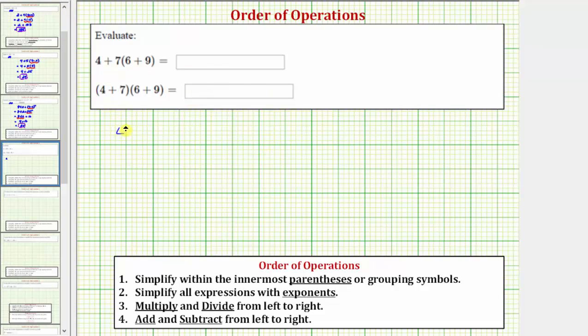So our first expression, we have four plus seven times the quantity six plus nine. Looking at the order of operations, the first step is to simplify within the innermost parentheses or grouping symbols, which means for this first expression, we want to simplify inside the parentheses first. We want to simplify six plus nine. And because six plus nine is equal to 15, this expression simplifies to four plus seven times 15.